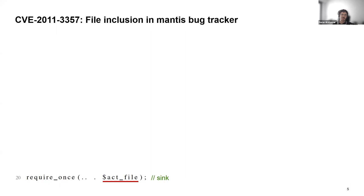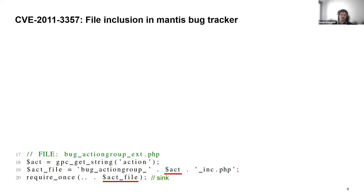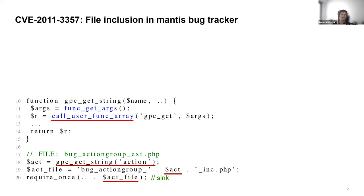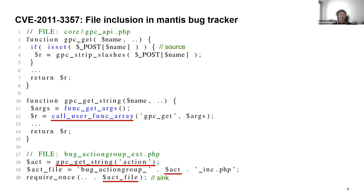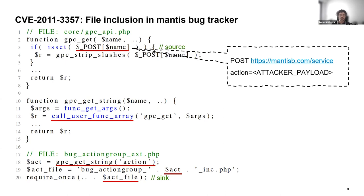Going backward from the sink, the file variable comes from a call to gpc_get_string, which internally uses call_user_func_array — a PHP built-in to call functions dynamically. Here the function name is statically defined, so gpc_get will be called. Inside gpc_get, we see $_POST, which is the source. There's a clear path from source to sink — the user can manipulate which file is included, resulting in a file inclusion vulnerability.